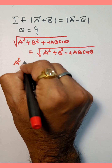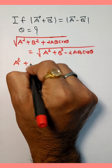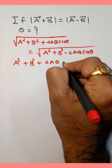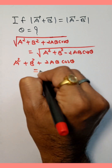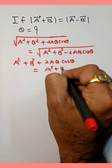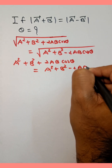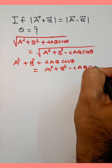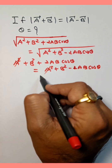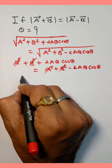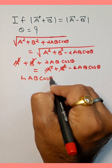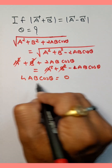Taking the square of both sides: a² + b² + 2ab cosθ = a² + b² - 2ab cosθ. The a² and b² terms cancel on both sides, leaving 2ab cosθ + 2ab cosθ = 0, so 4ab cosθ = 0.